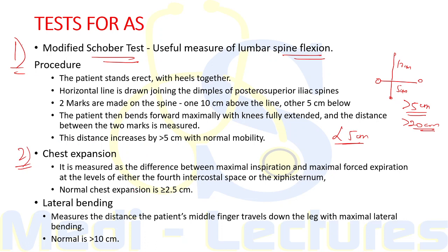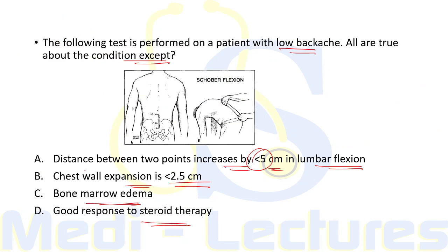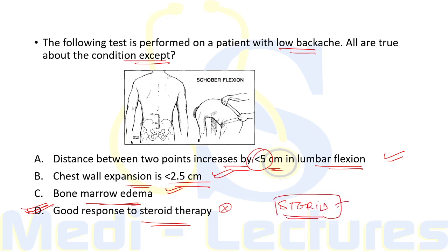The second test is chest expansion, measured as the difference between maximal inspiration and maximal forced expiration at the 4th intercostal space or xiphisternum. Normal chest expansion is more than or equal to 2.5 cm; in AS it is less than 2.5 cm. The third test is the lateral bending test — the distance the patient's middle finger travels down the leg with maximal lateral bending; normally more than 10 cm. Coming back to the question: the false statement is that the patient has good response to steroid therapy. Steroid therapy is not included in treatment of ankylosing spondylitis.